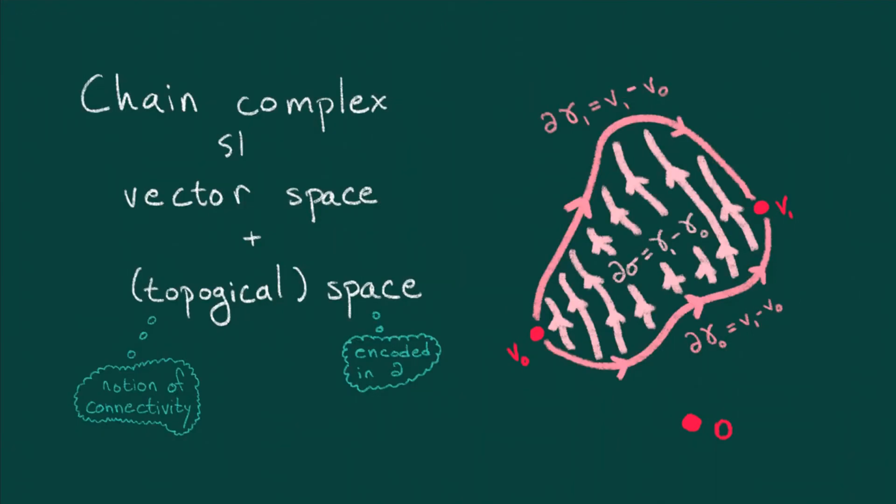A chain complex is like a vector space in that you can generate interesting equations by adding, subtracting, dilating its constituents, and there's a distinguished zero. But a chain complex also has a geometric feel to it, like a topological space.